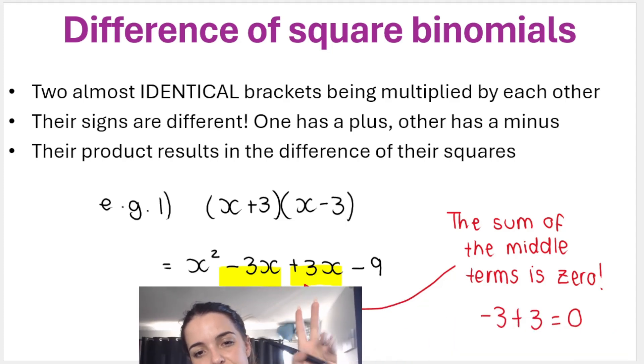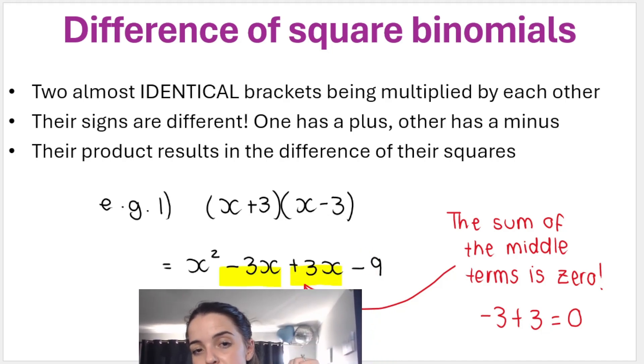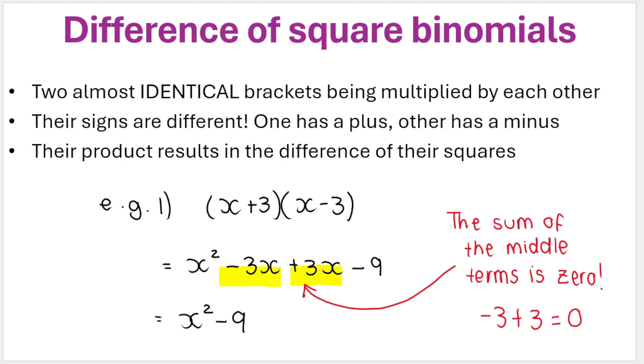That middle terms, those middle terms cancel each other out. They're inverse operations. Additive inverses, they disappear. So we end up getting x squared minus nine.